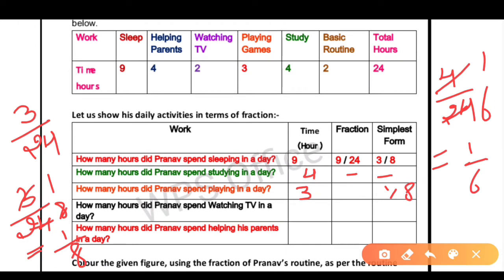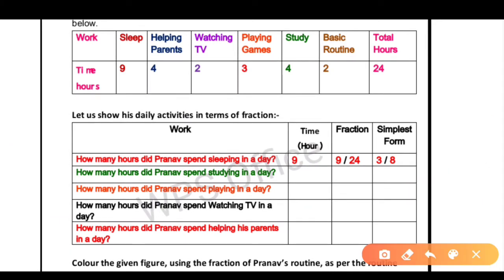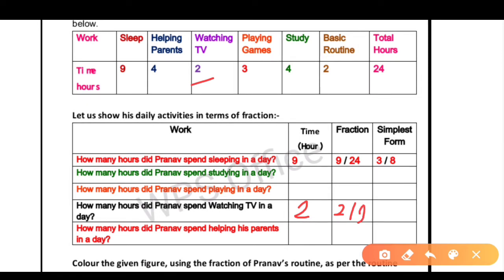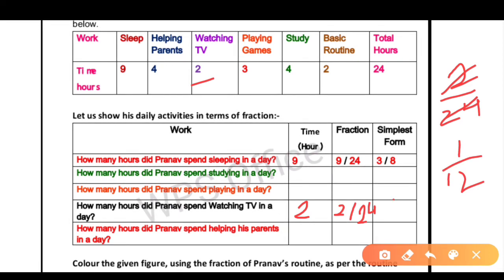How many hours did Pranav spend watching TV in a day? He watches TV for 2 hours. So the fraction is 2 by 24. When we simplify 2/24, we divide both by 2, and the simplest fraction is 1 by 12.